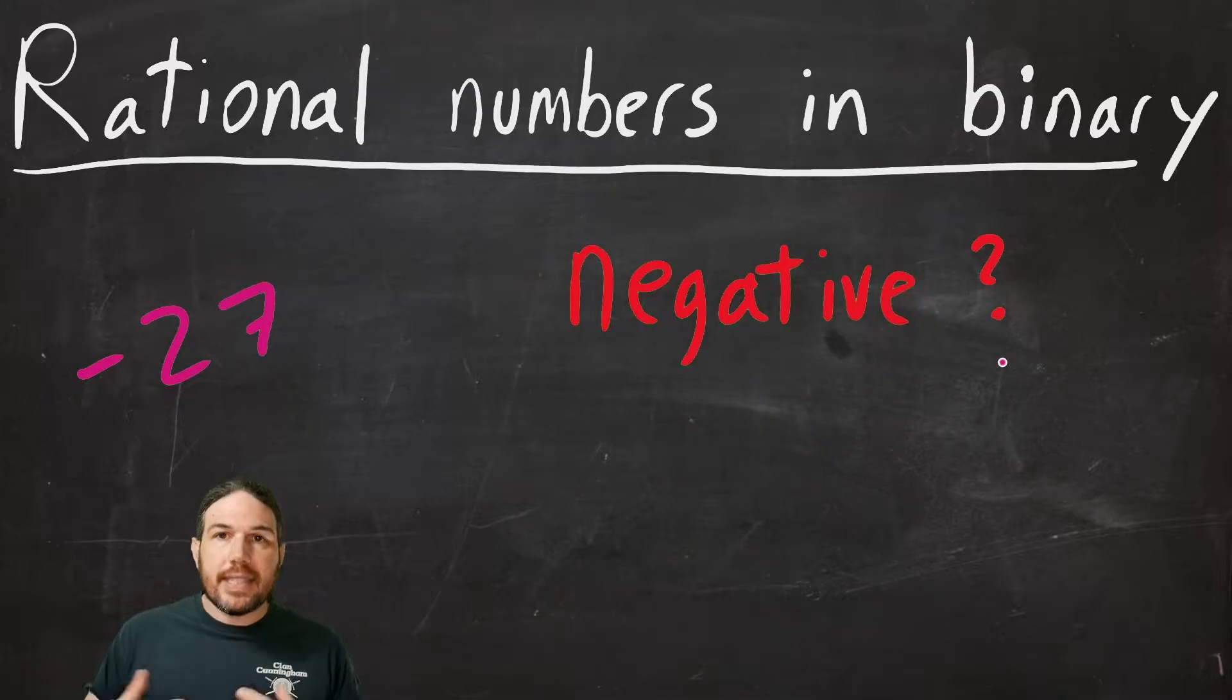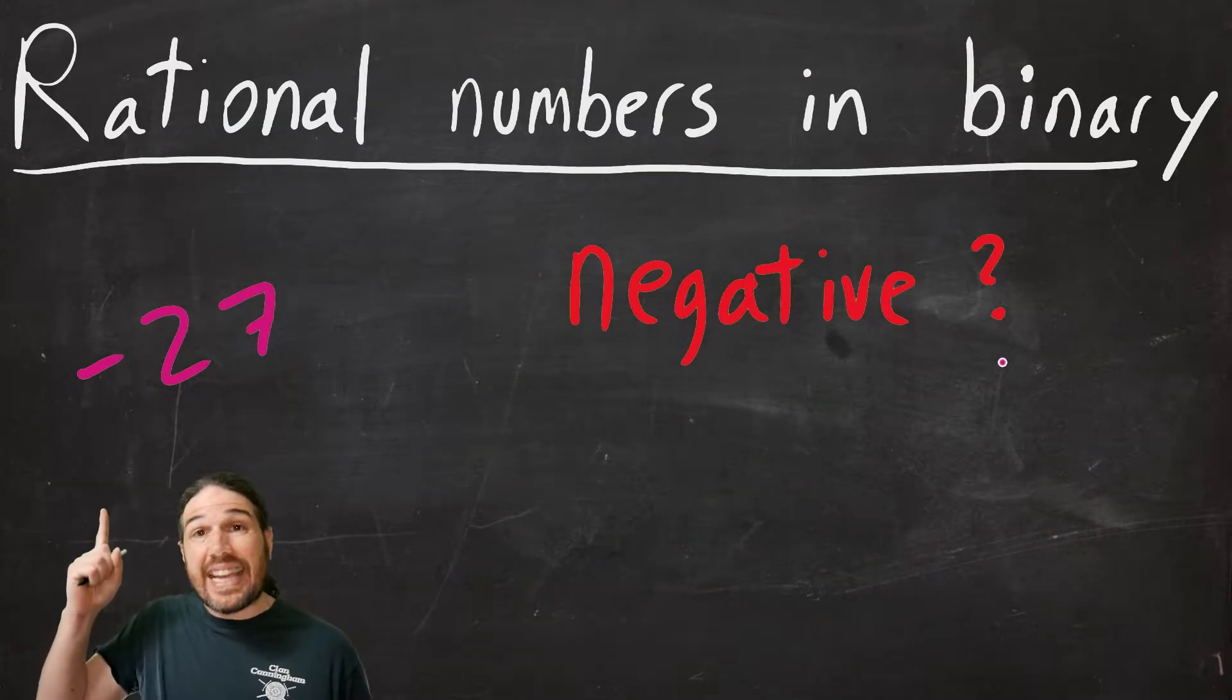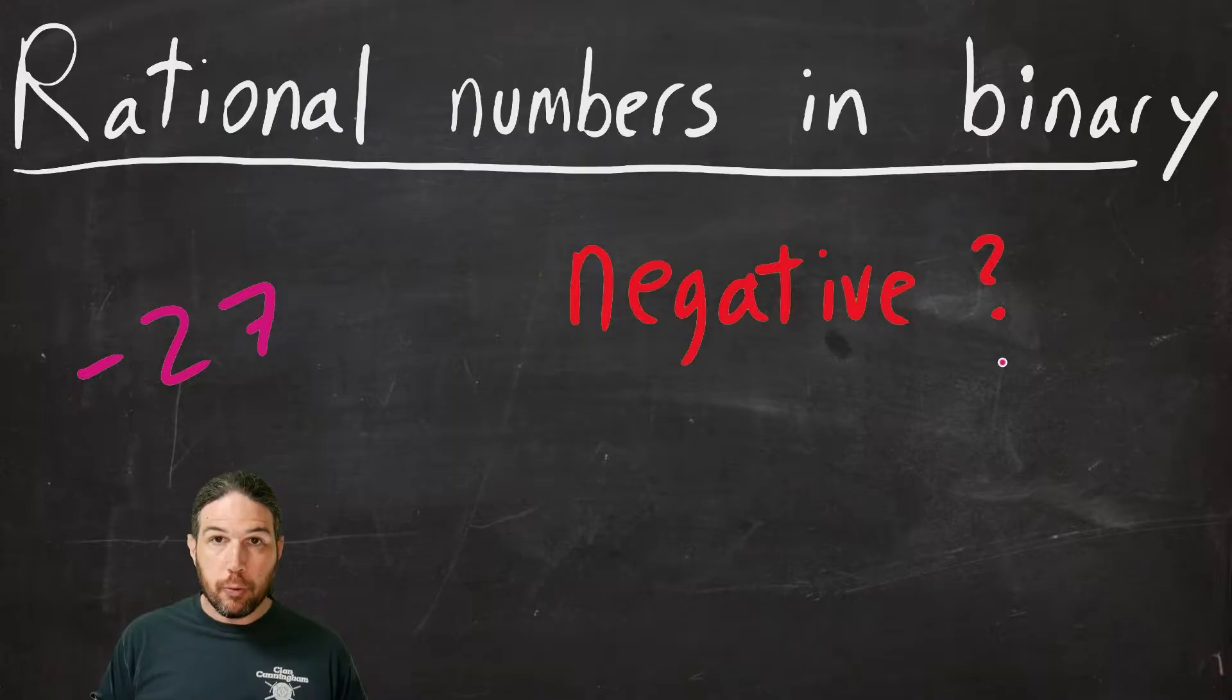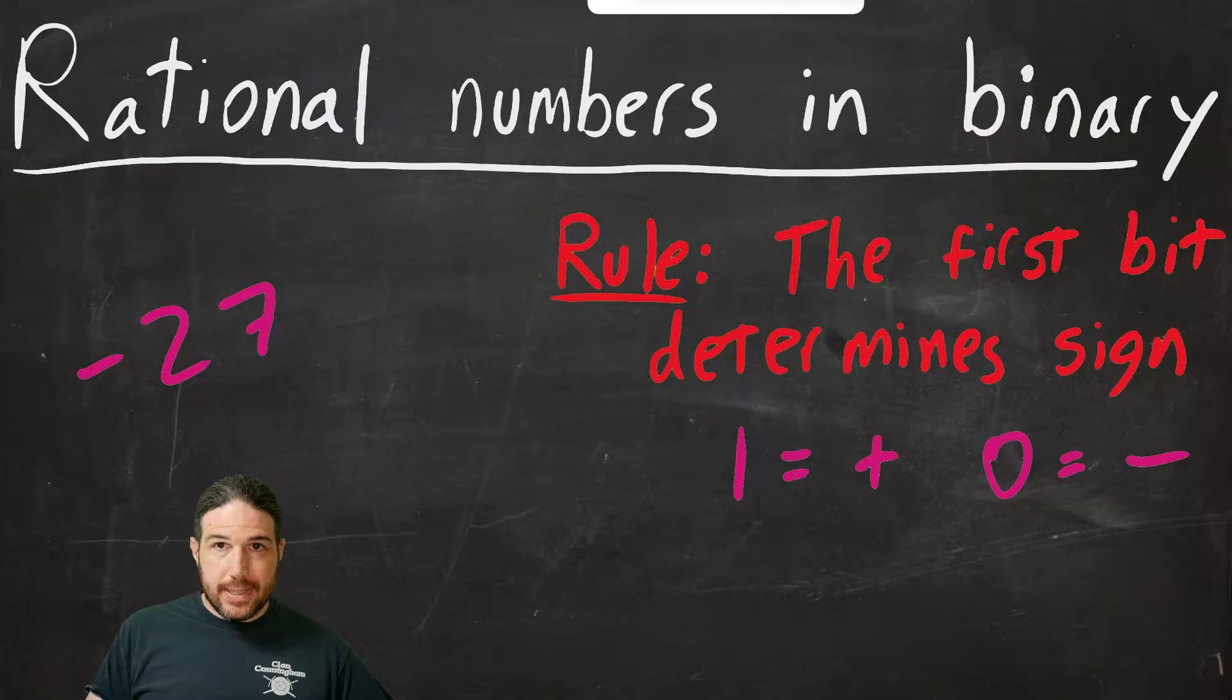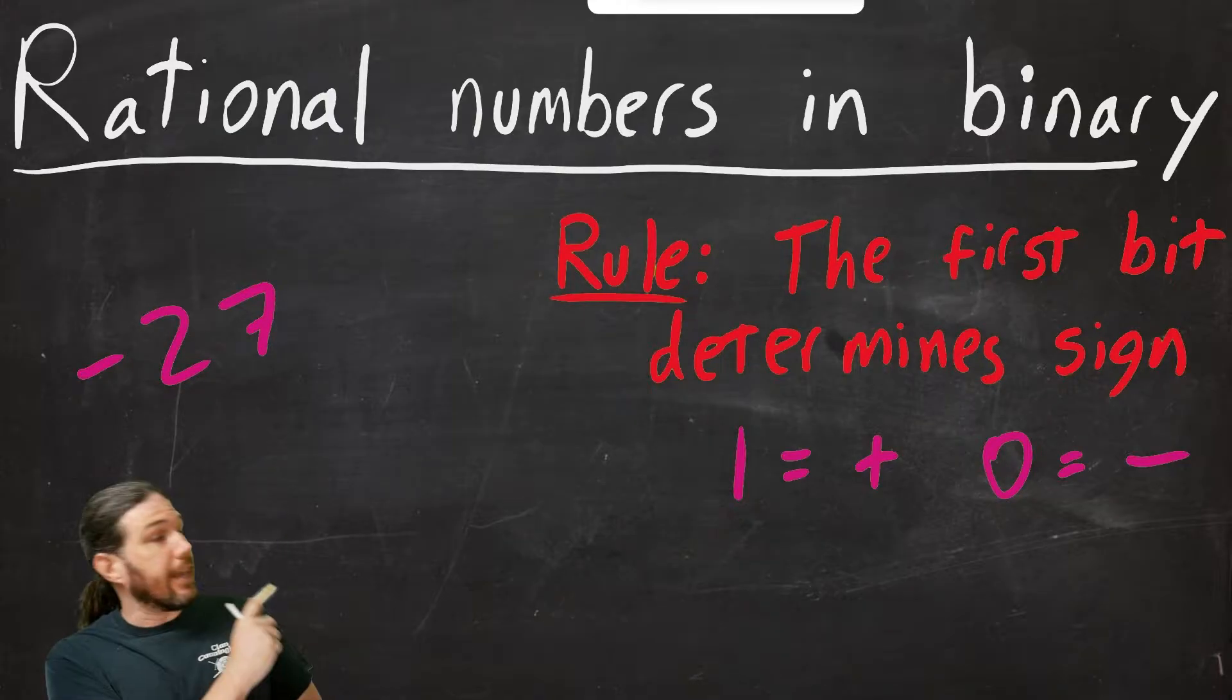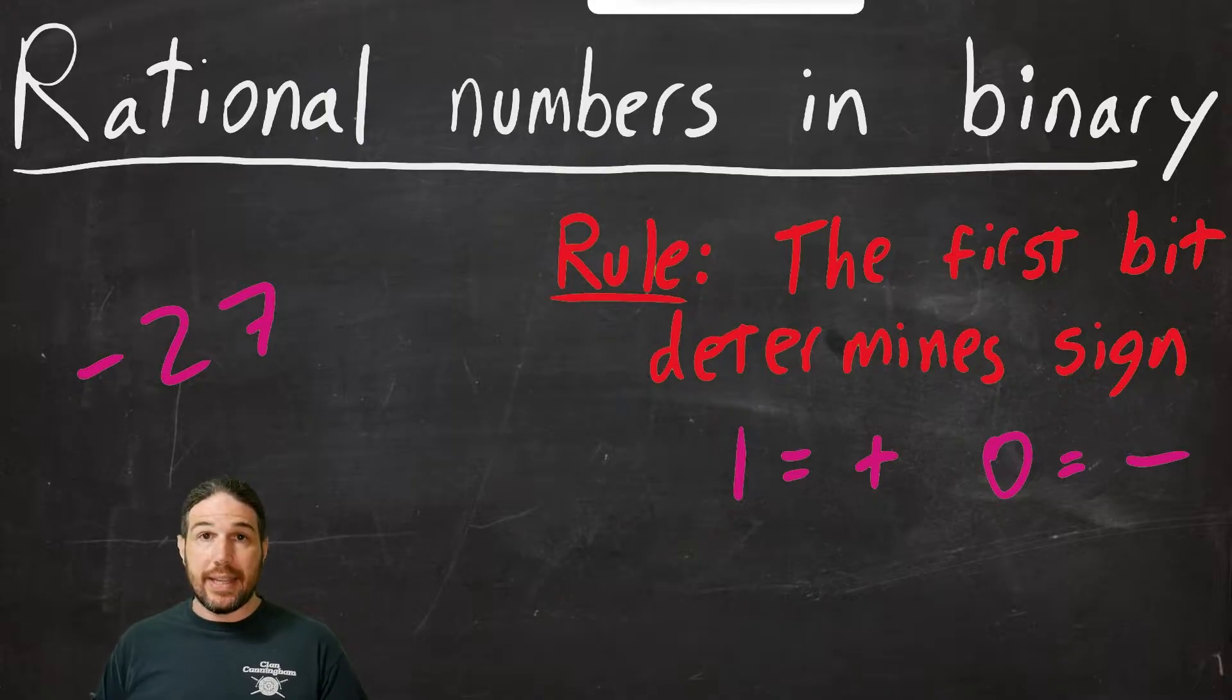If we wanted to represent negative 27, we have to set up some new rules for binary. The ones and zeros don't have any inherent meaning on their own. They only have meaning when you run them through a computer that translates them back into numbers or text or pictures or whatever. We're going to say that for the purposes of this video, the very first bit in a number will determine positive or negative status. If that first bit is a one, then the number is positive. If that first bit is a zero, then the number is negative.